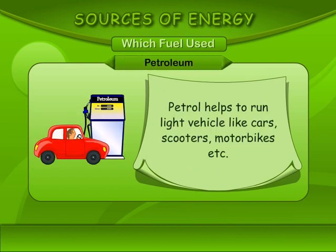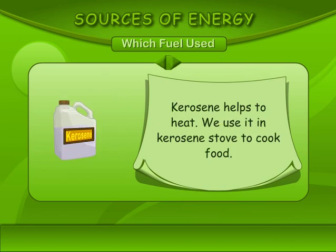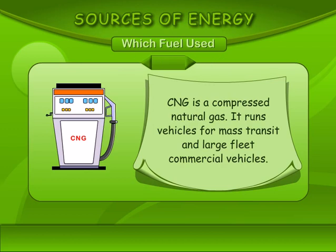Petroleum: Petrol helps to run light vehicles like cars, scooters, and motorbikes. Kerosene helps to heat — we use it in kerosene stoves to cook food. CNG is a compressed natural gas; it runs vehicles for mass transit and large fleet commercial vehicles.